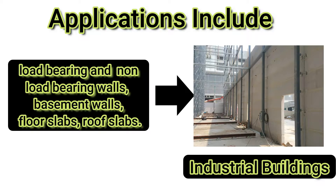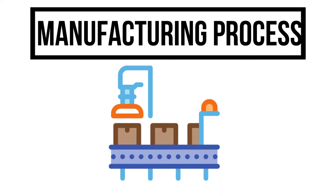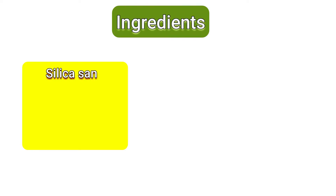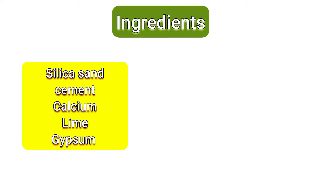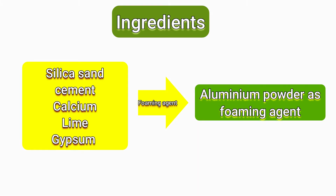Let us go through the manufacturing process of ALC Panels. The ingredients constitute silica sand, cement, calcium, lime, gypsum, etc. And aluminum powder is used as a forming agent.